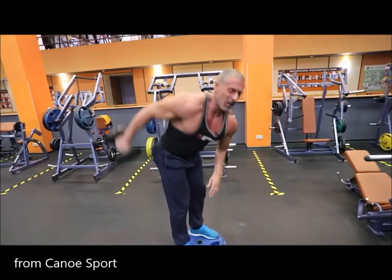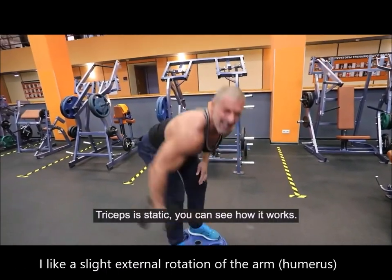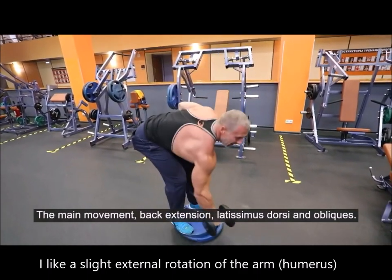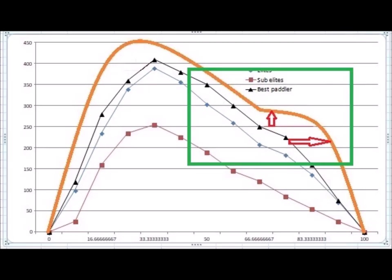A rowing exercise is a great exercise to improve the strength of your bottom arm for the entire phase of the paddle propulsion stroke.